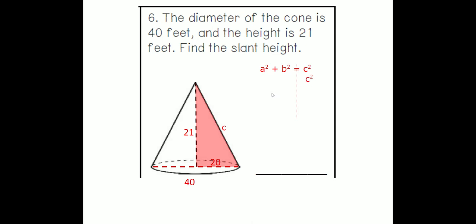C is missing. We know A squared and B squared, or we know A and B. 20 squared is 400. 21 squared is 441. And C squared is still missing, so we add up those two. 400 plus 441 is 841. We square root both of them, and we should get 29. So our slant height is 29 feet.